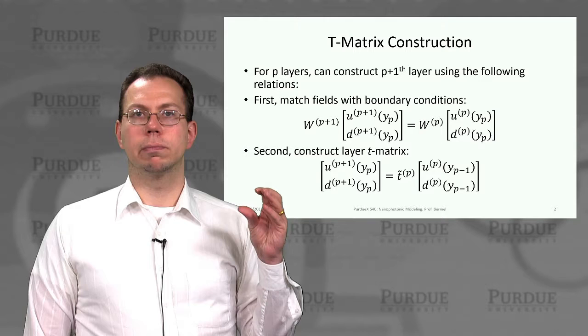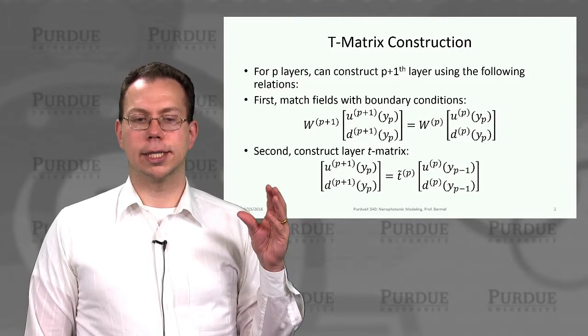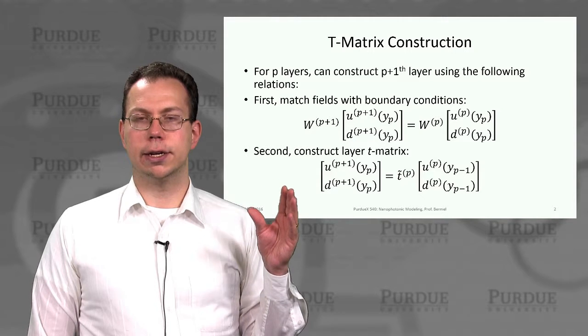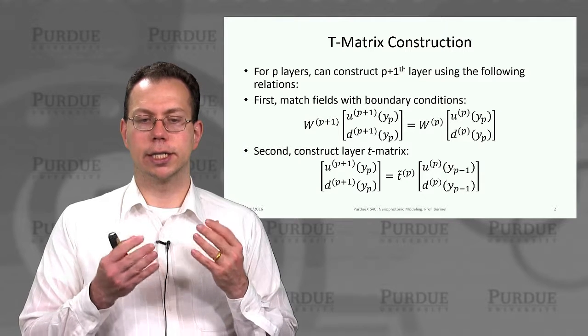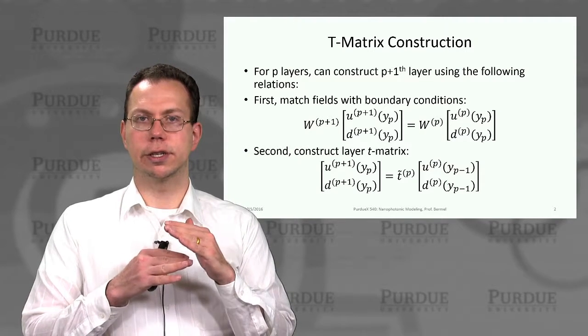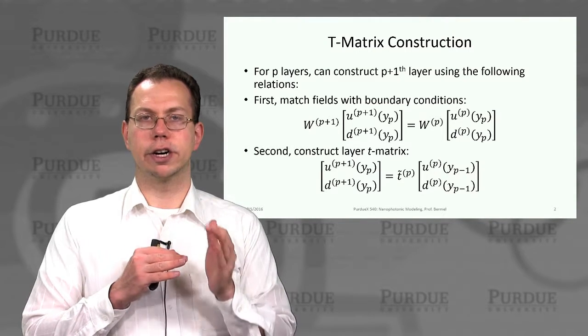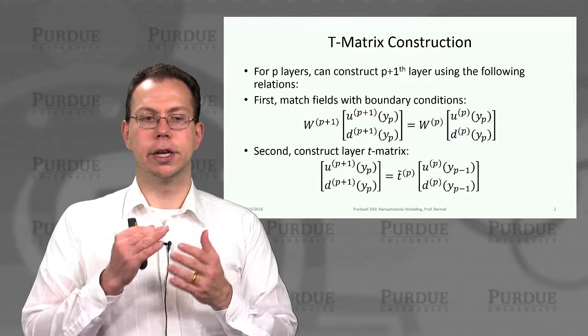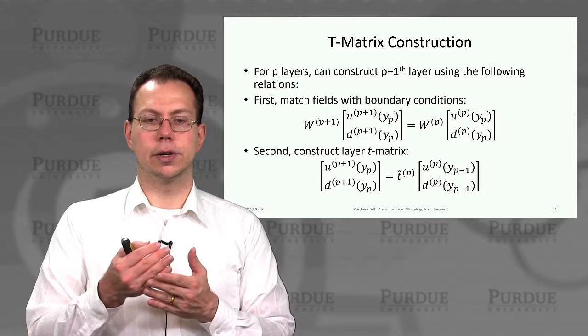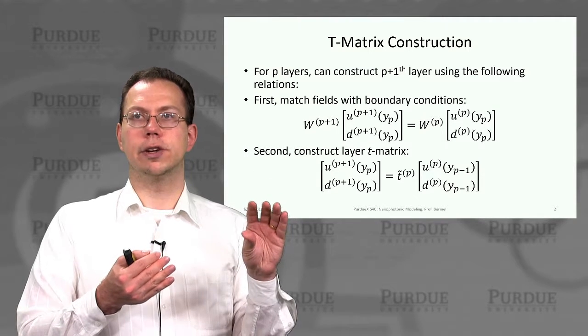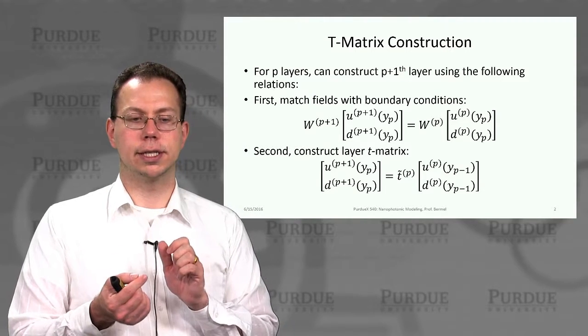We said that we want to do multiple layers. So here the concept is that we want to create a general way to treat p layers, where p is an arbitrary number, instead of just a pair of layers or a single layer like we were talking about earlier. And so here the idea is that we'll have a recursive approach, kind of like a proof by induction, where we start with p layers and then we construct a p plus one layer. Since we already showed we can do it for one, and then if we can do p and then p plus one, then that should cover all the cases that we care about.